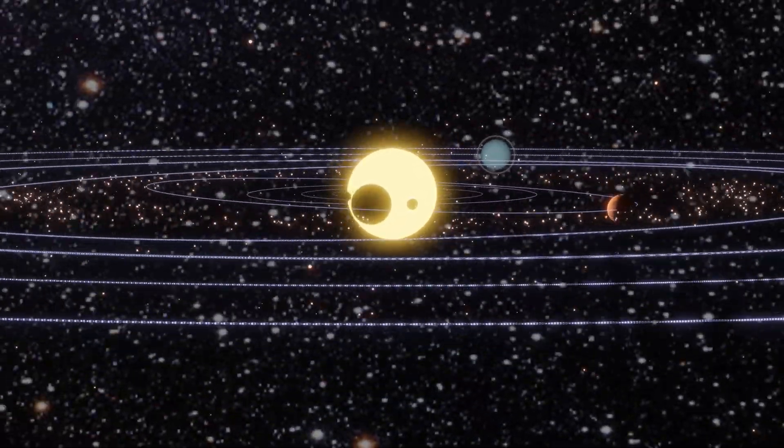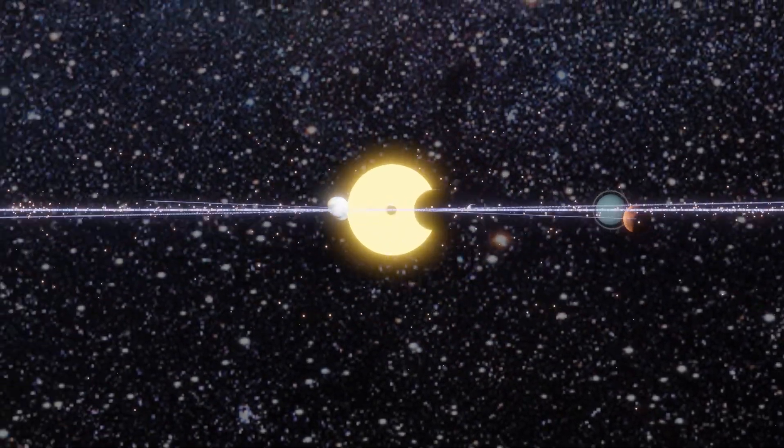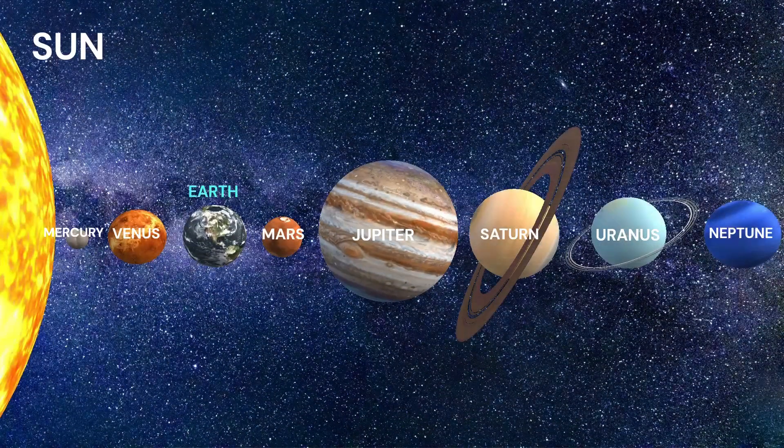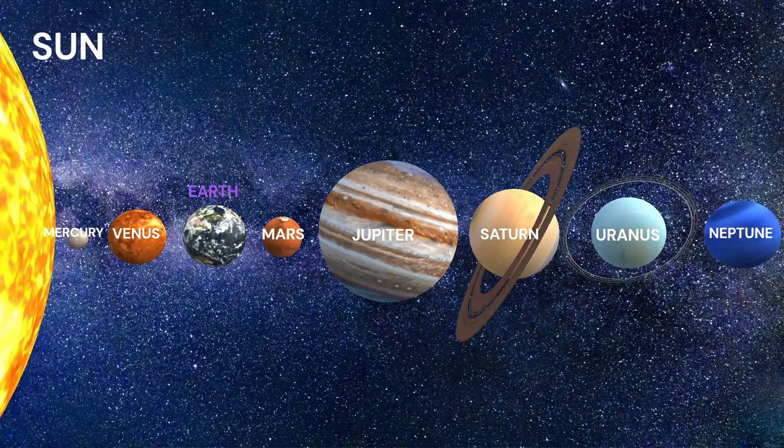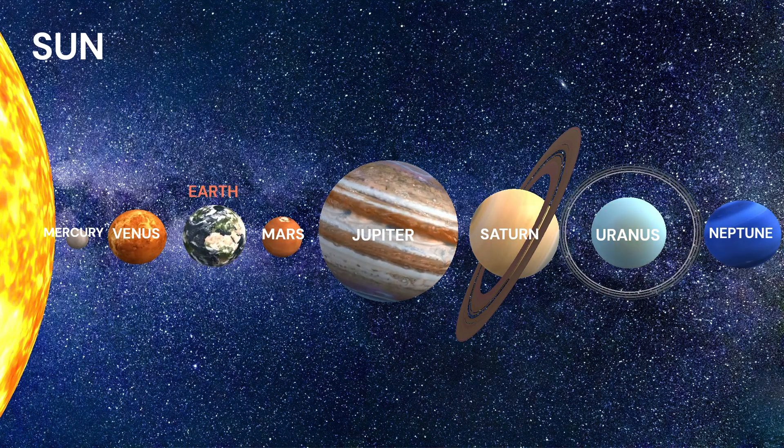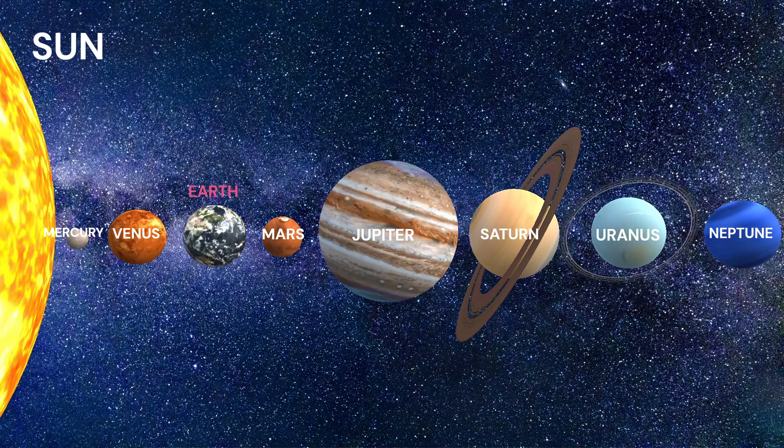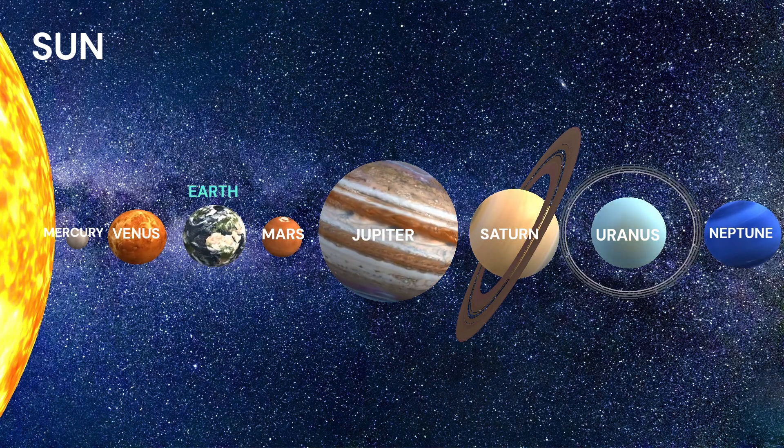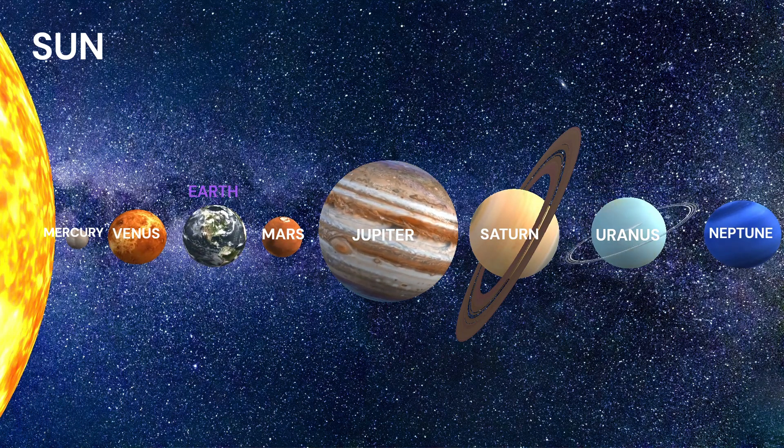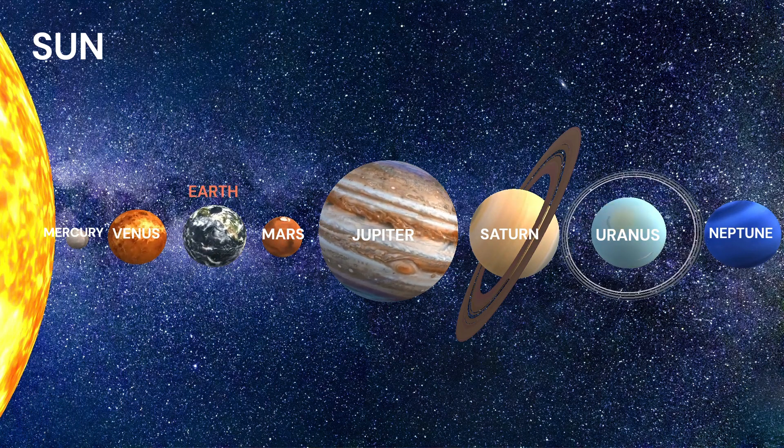Interesting facts about the solar system: The solar system consists of eight planets—Mercury, Venus, Earth, Mars, Jupiter, Saturn, Uranus, and Neptune. The largest planet in our solar system is Jupiter. It is so big that all the other planets in the solar system could fit inside it.